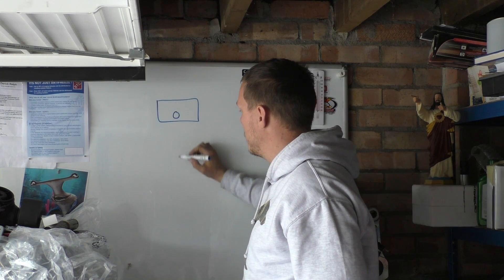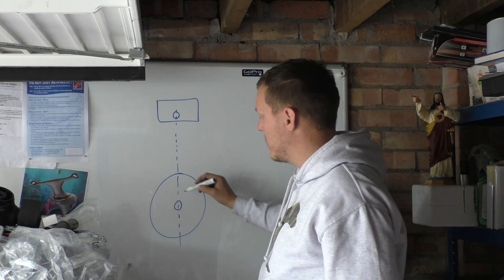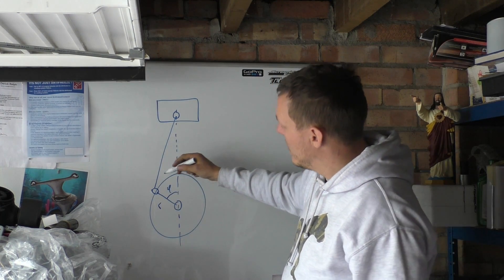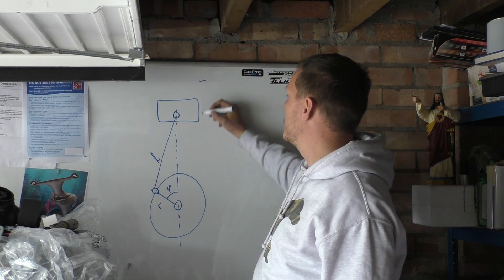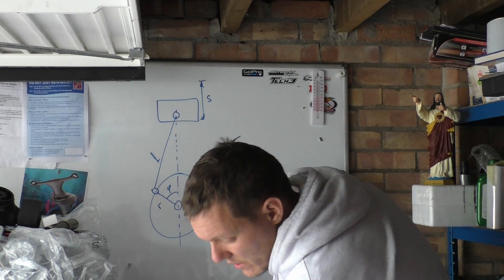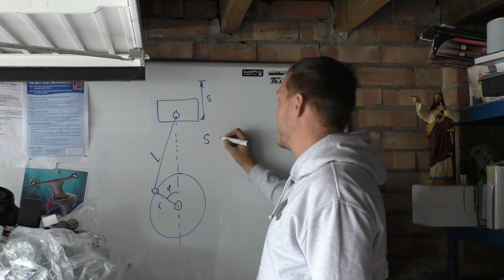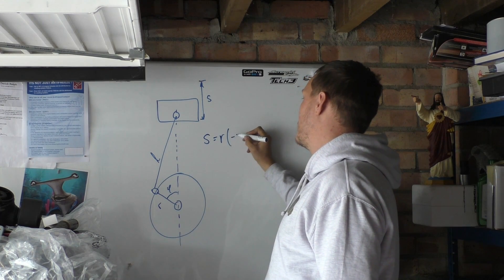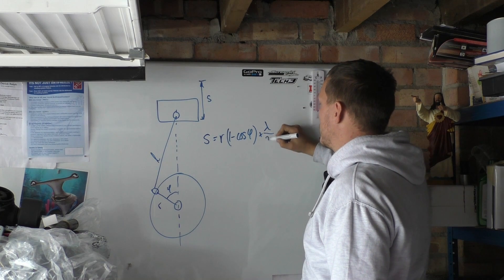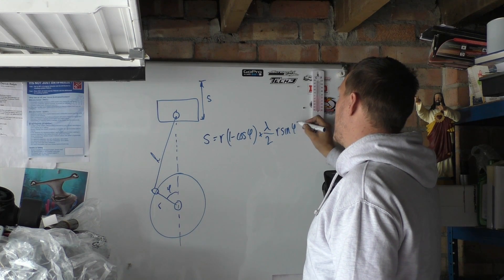So we have our piston, we have our rod, we have our centre line, we have our crank pin circle. We have R, we have phi, we have L - and that is all you need to know when you want to work out your stroke. The equation is: S equals R times one minus cosine phi, plus lambda over two times R sine phi squared. That's the one.